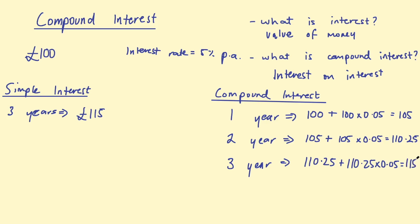I get £115.7625 after three years. So you can see it's not drastically different to simple interest — after three years we're only making an extra 76 pence. But it is more, and it depends on how much you initially invest. If this was £100,000 instead of £100, you can see it would be a good amount extra rather than just 76 pence.